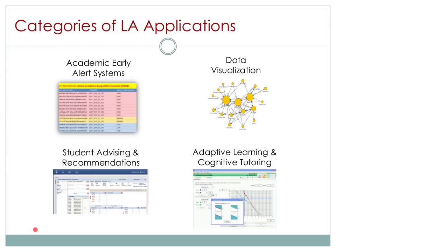Another area I'm particularly intrigued by is data visualization — using sophisticated tools that take a set of data that might take human beings a long time to analyze in a text-based format and present it in a visualization that makes it very easy to quickly understand that information. A concrete example is a tool we've been exploring called SNAP, a social network visualization tool that takes interactions in online discussion forums and creates a social network map, very quickly telling an instructor who the most influential people in the discussion are.